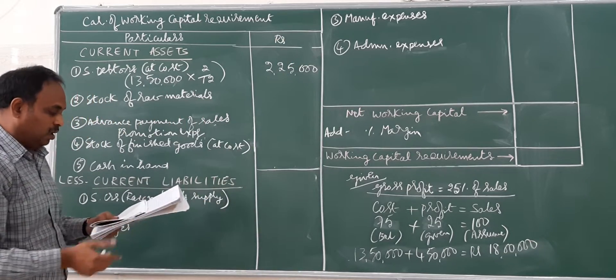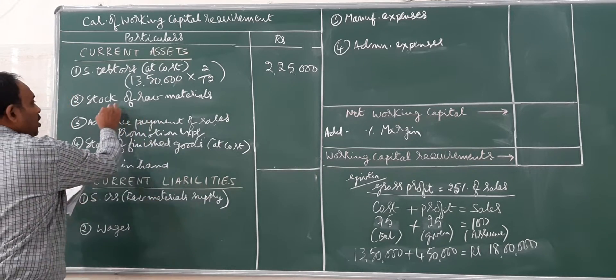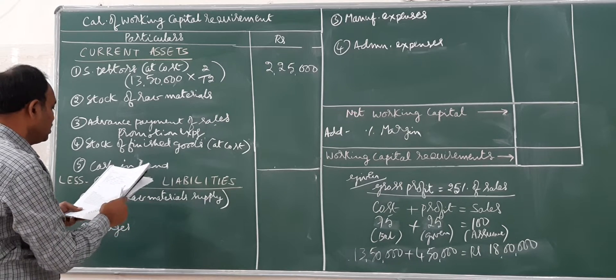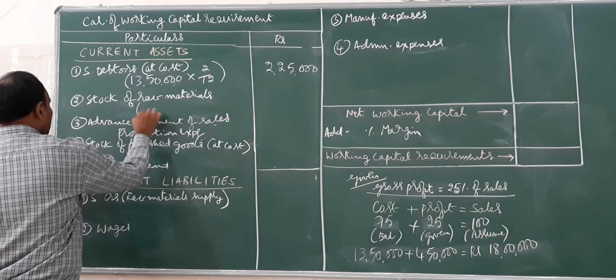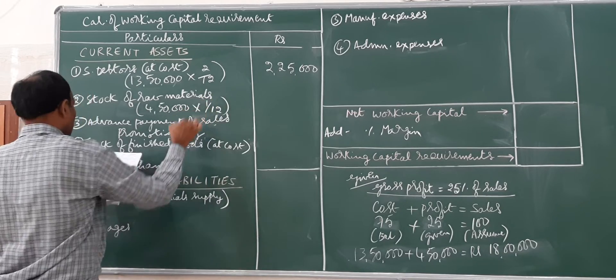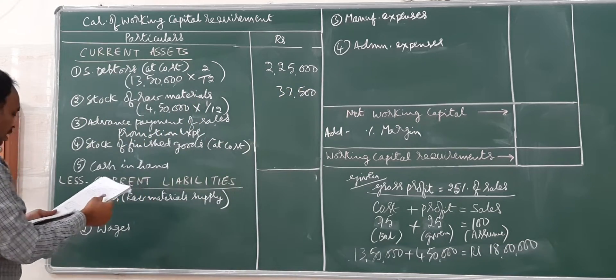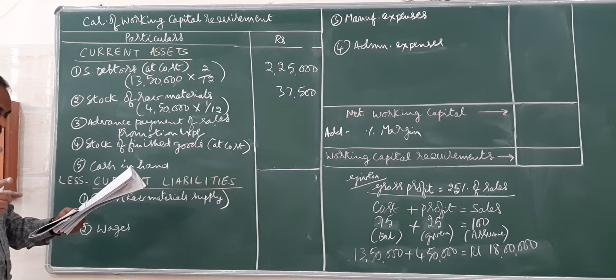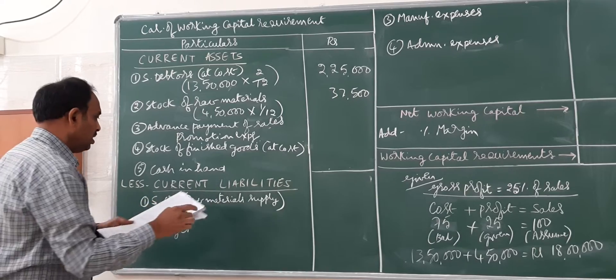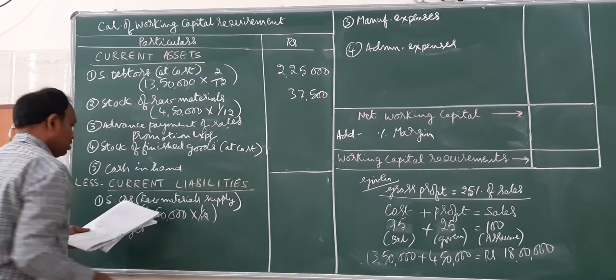Materials consumed is raw material, so stock of raw material and creditors. Raw materials consumed is one month, so stock of raw material is 4 lakh 50,000 into 1 by 12, which equals 37,500. The company keeps one month stock of raw materials. We assume creditors also get one month credit, so 1 by 12, same amount 37,500.